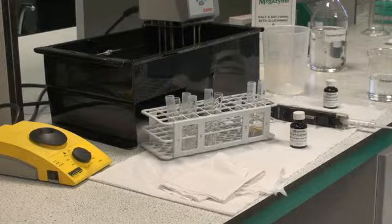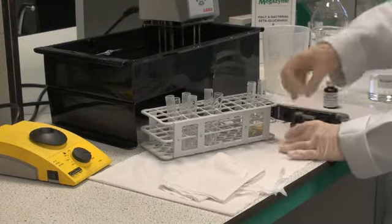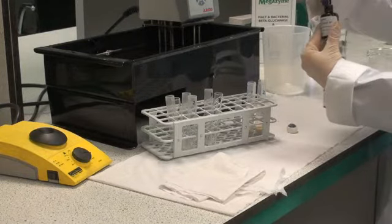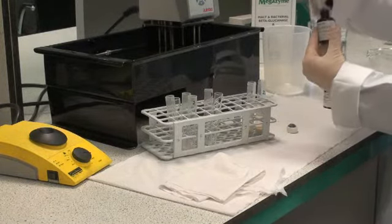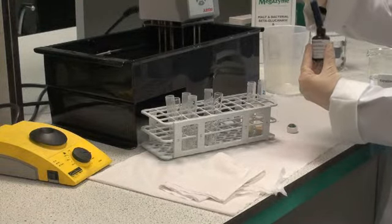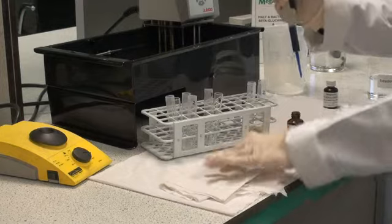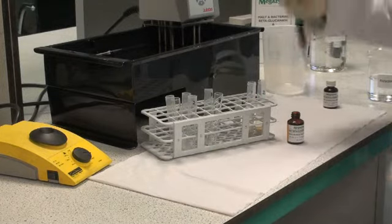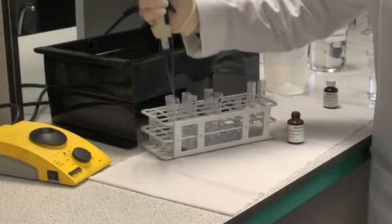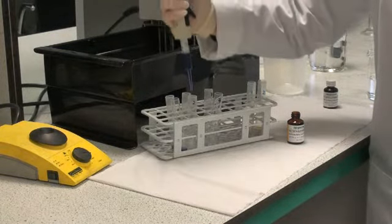With a positive displacement dispenser, dispense 0.5 ml of the azo barley glucan substrate into the reaction tubes and into two tubes to be used as blanks. This solution is viscous, so be careful when dispensing to use a positive displacement dispenser. Then dispense the liquid down into the tube.